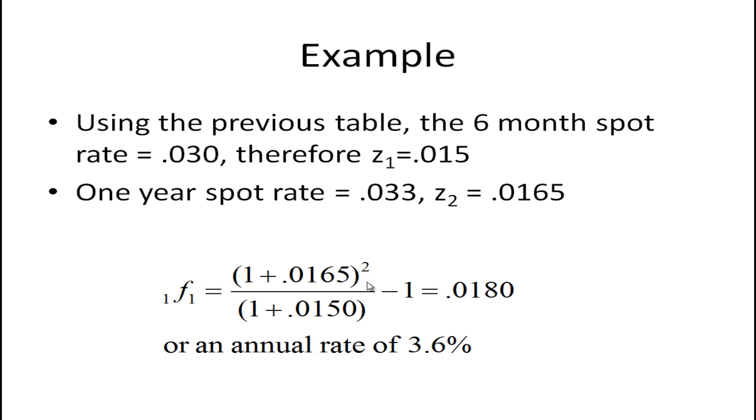So if we just substitute into that equation that we had we get .0180 or a 3.6 percent annual rate. Now if you sort of think about it it kind of makes sense because for the person investing in the one year bond they demand a 3.3 percent return. Why is that? Because they want to get the average essentially of the rate that you get for the one year bond and the expected forward rate.